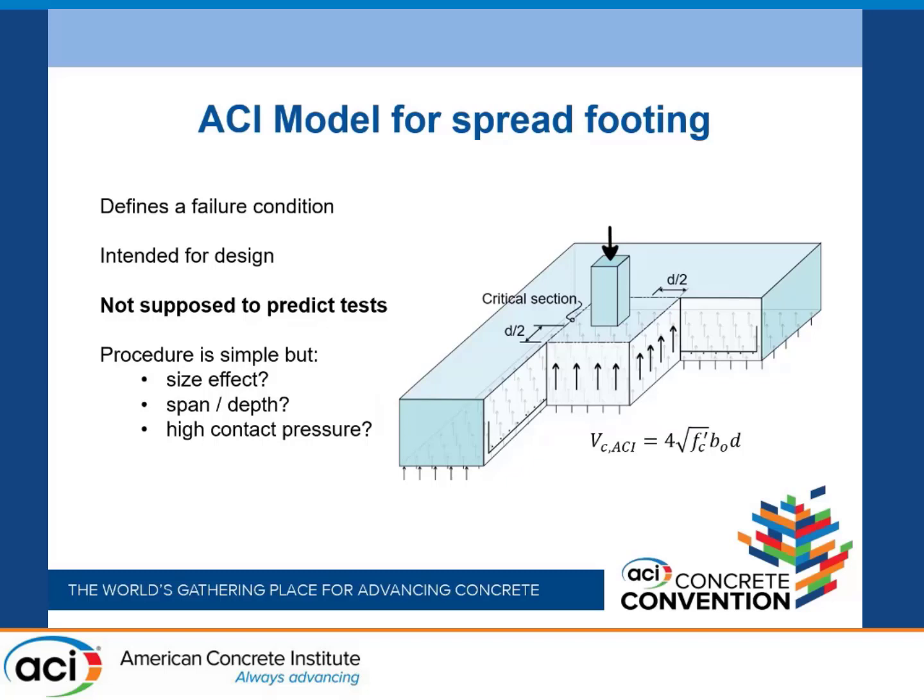If you go back to the original Moe test work, he had an analytical method that did account for reinforcement and did account for a bunch of other stuff, and that was deemed unnecessary for design because in design you can always presume the flexural reinforcement will be provided. So it wasn't necessary to count it twice. That's how we got to this very simple model.